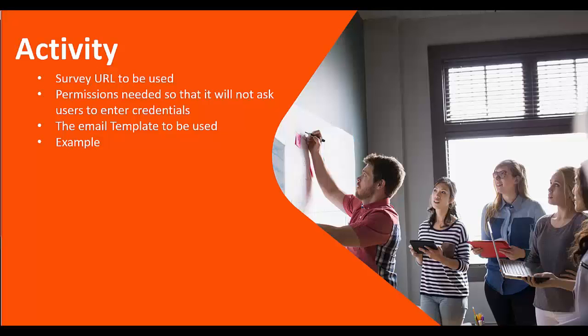The activities we are going to look into are: the survey URL to be used in the email template, permissions needed so that it will not ask users to enter credentials and will directly open up the survey page to fill up the survey, the email template to be used — this will be the canned email template — and a workflow to be used, along with a common example.